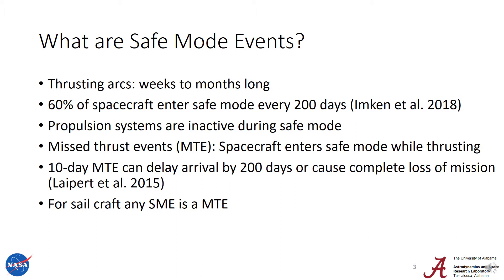This is a problem because 60% of spacecraft enter a safe mode every 200 days. During the safe mode, the spacecraft focuses on ensuring its survival and communication with Earth, and one of the things it does is shut down non-essential subsystems like propulsion. If one of these safe mode events overlaps with a thrusting arc, this is the start of what's called a missed thrust event.